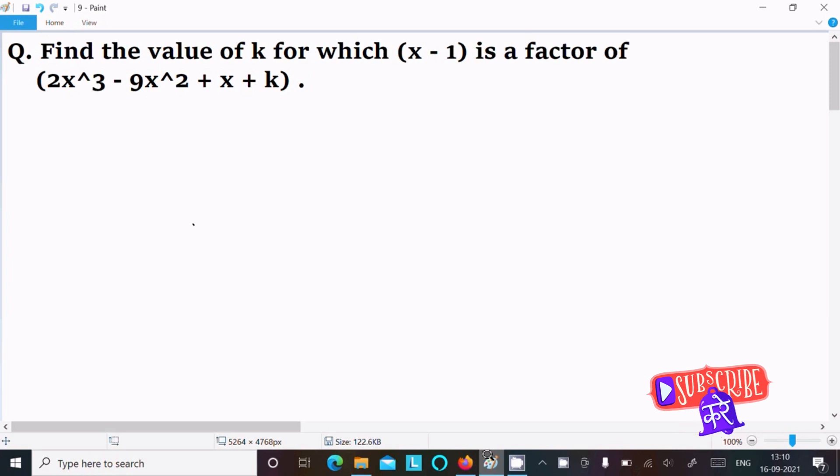In this video lecture I am going to find the value of k for which x minus 1 is the factor of 2x cube minus 9x square plus x plus k. Let's see the answer. So first here I am going to assume f(x) equal to 2x cube minus 9x square plus x plus k.